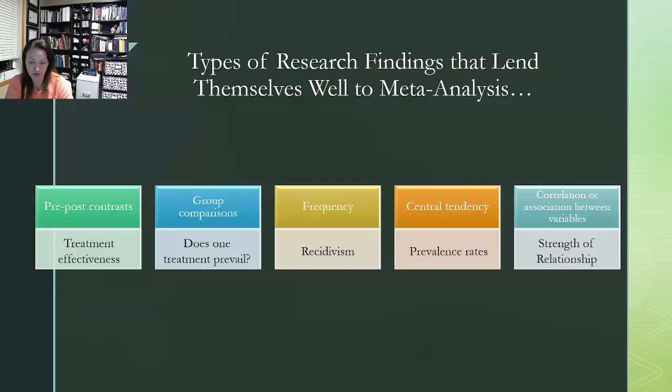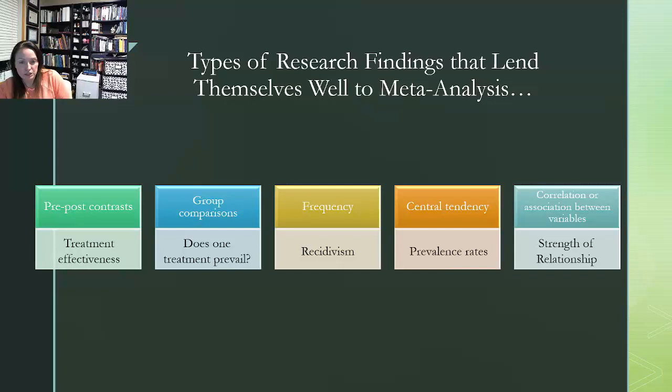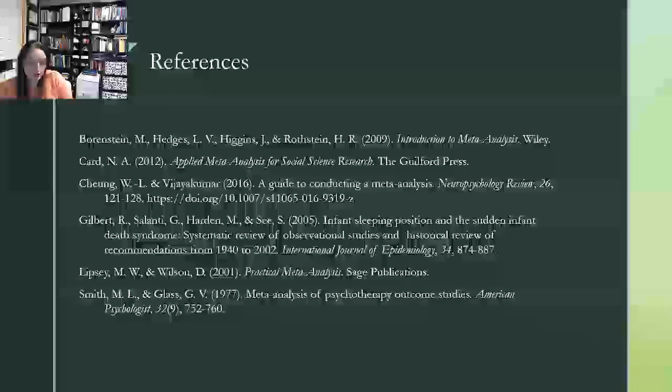And then lastly, correlation or association between variables. So looking at whether or not two variables are related to one another. And we want to be looking at this relationship in more detail. So the strength of that. So is it strong? Is it weak? Is it positive? Is it negative? What does that relationship look like in more detail? And that closes our first mini lecture for week one.